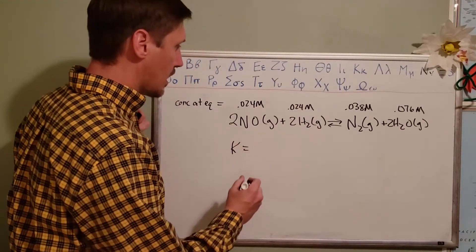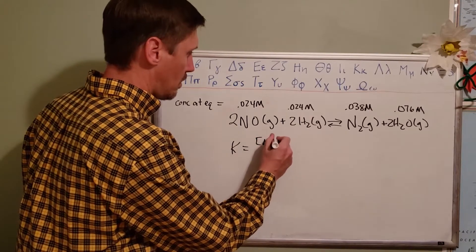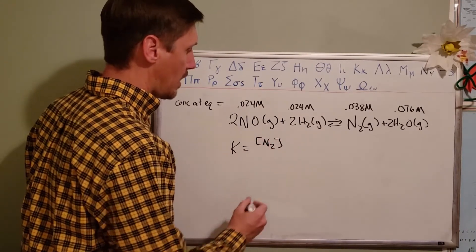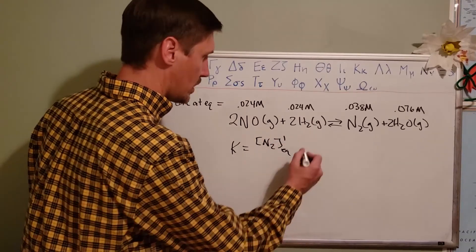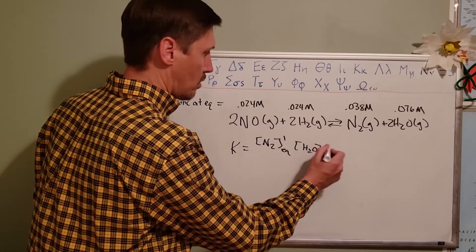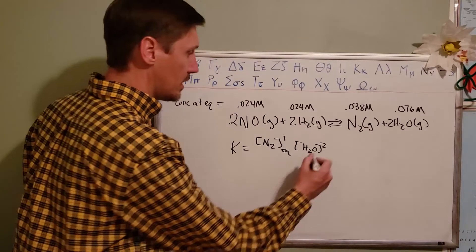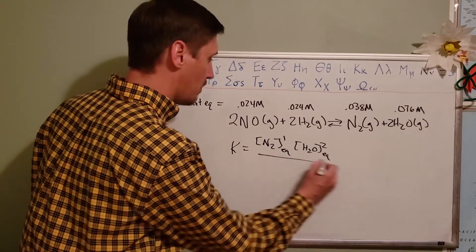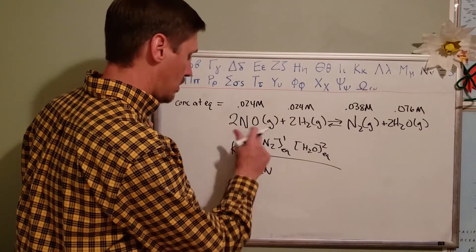We've got that information written down here. Remember the equilibrium constant is going to be the concentration of N2 at equilibrium raised to the power of its coefficient, which is just one in this case, times the concentration of H2O raised to the second power because of the two coefficient in front of it.